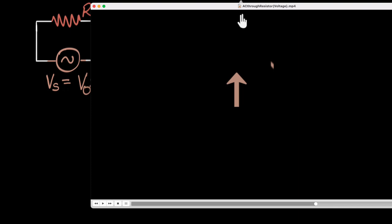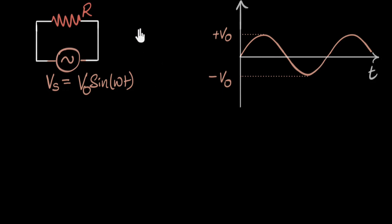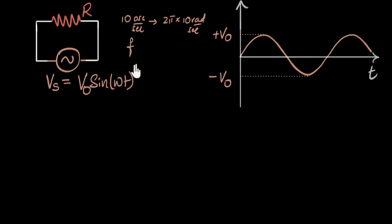How quickly the voltage oscillates depends on omega. Omega gives you the radians per second. You might wonder what radians mean here — the way to think about it is that one full oscillation corresponds to two pi radians. We imagine it like a full circle, and it's called a phase angle because it's not a real angle. So one full oscillation equals two pi radians. If we have, say, 10 oscillations per second, that equals two pi times 10 radians per second. In general, if we have f oscillations per second, omega equals two pi f radians per second. If you know omega, you can divide by two pi to calculate f.